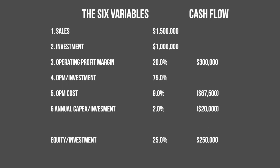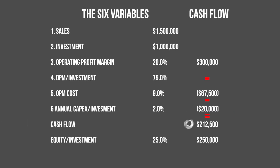This makes our current pre-tax investor cash flow — which you get by taking your EBITDA and then subtracting OPM annual cost and the $20,000 added investment you make every year — $212,500.